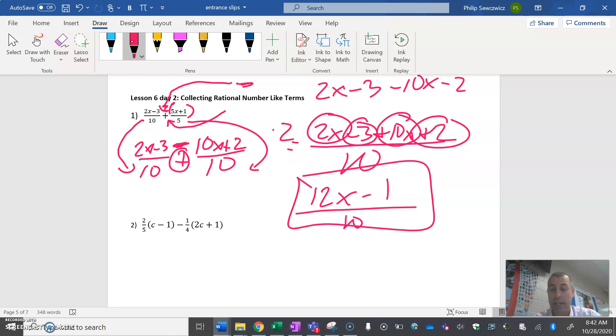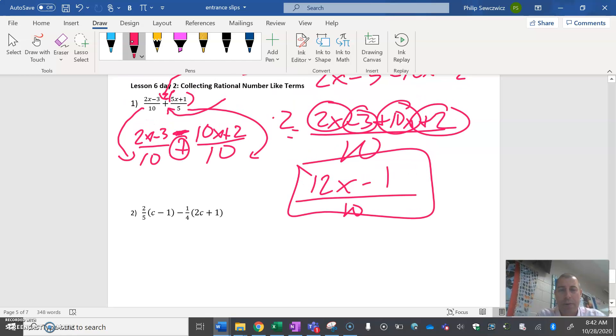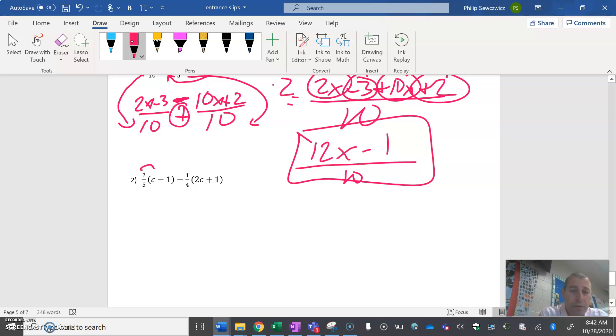Question number two: there's no fractions here - well, there is a fraction but that's your distributive property, it's not all being divided by ten or five. We're just going to distribute. Two-fifths times c, that's two c. Two-fifths times negative one, that's negative two-fifths. Keep going, and this is what we want to watch for: that's a negative one-fourth.